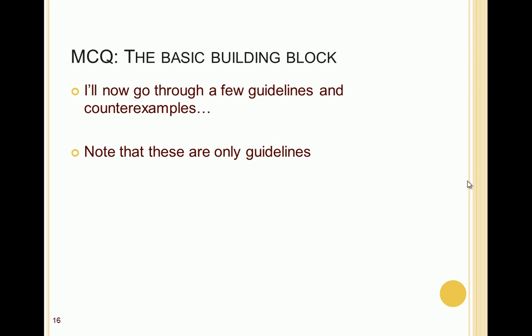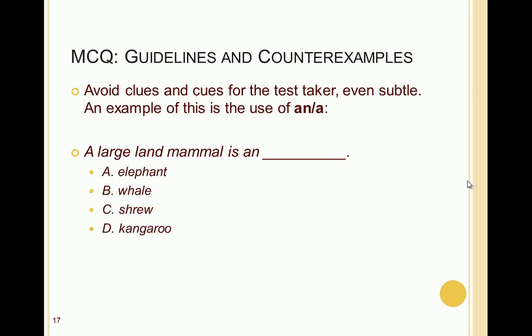Now I'll go through some specific guidelines and counterexamples. Note that all of these are only guidelines and best practices — in some cases it is okay to break them, but not very often. First guideline: avoid clues and cues for the test taker, even subtle ones. An example is the use of 'a' or 'an' in a sentence completion. For example, 'A large land mammal is an ___.' Because it says 'an' instead of 'a,' we know grammatically the answer begins with a vowel — and of the four answers, only 'elephant' begins with a vowel, making it the only grammatically possible answer.